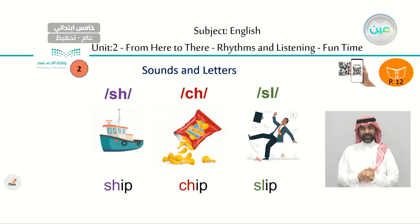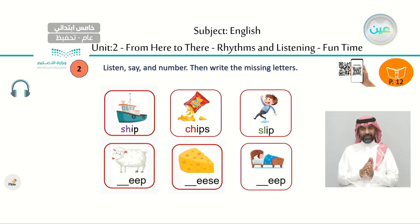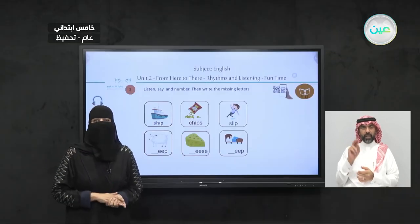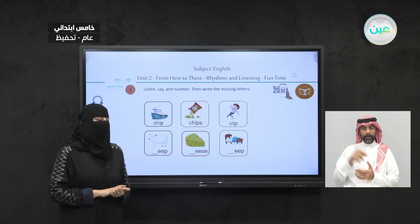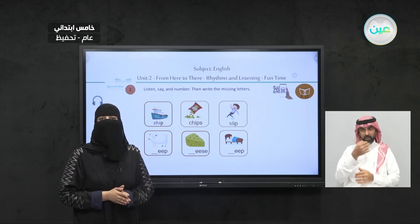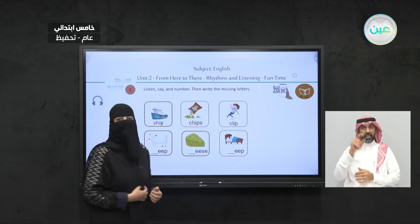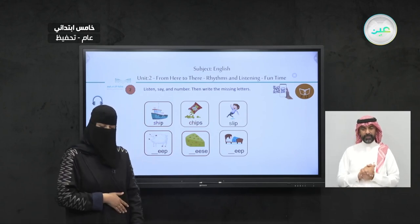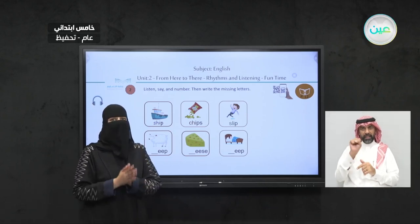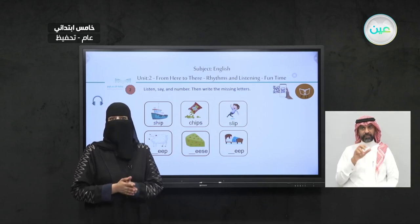So slip — that's good. Let's read them together: S-H says sh, ship. Let's repeat after me please. Number two: C-H says ch, ch, chips, chips. Number three: S-L says sl, slip.